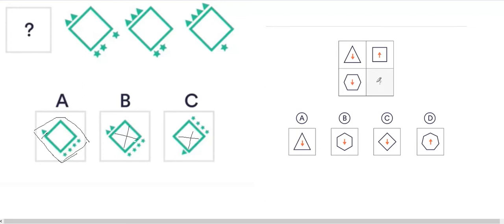Here we have to find the missing diagram. We have shapes and arrows - these two have arrows in different directions. In this box, the arrow should be in the upward direction, that much is certain. Let's see which diagram has the arrow in the upward direction. All the others are excluded - this is the right answer because the arrow is in the upward direction.